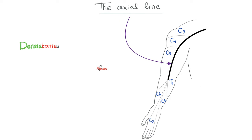An important topic: the axial line. Look at this: C3 dermatome, C4, C5, C6, C7, C8, T1, etc. Notice what happened to C6, C7, C8, and T1 — as we were trying to go back to the spinal cord, they disappeared. They are not continuous in the trunk; they stopped at the axial line. Because as your limb started budding out of your trunk, it got elongated from the axial line. The axial line is the line of junction of dermatomes supplied by discontinuous — not continuous — spinal segments.